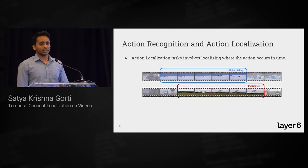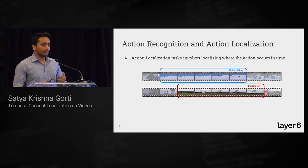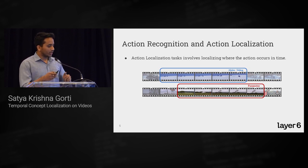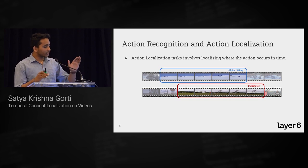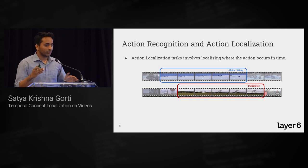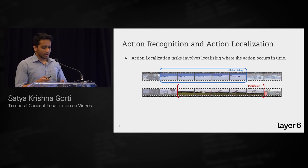Action localization is a little more specific — it involves finding the boundaries of where actions occur and what actions occur within those boundaries. As an example, we have the boundary of alpine skiing from frame A to frame B, and we need to identify where these boundaries are.